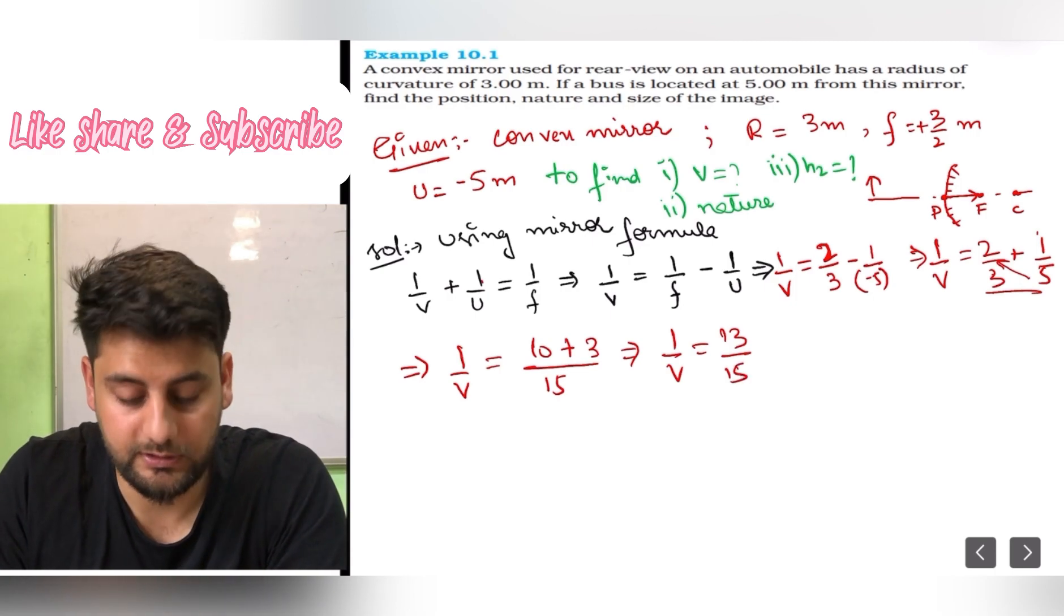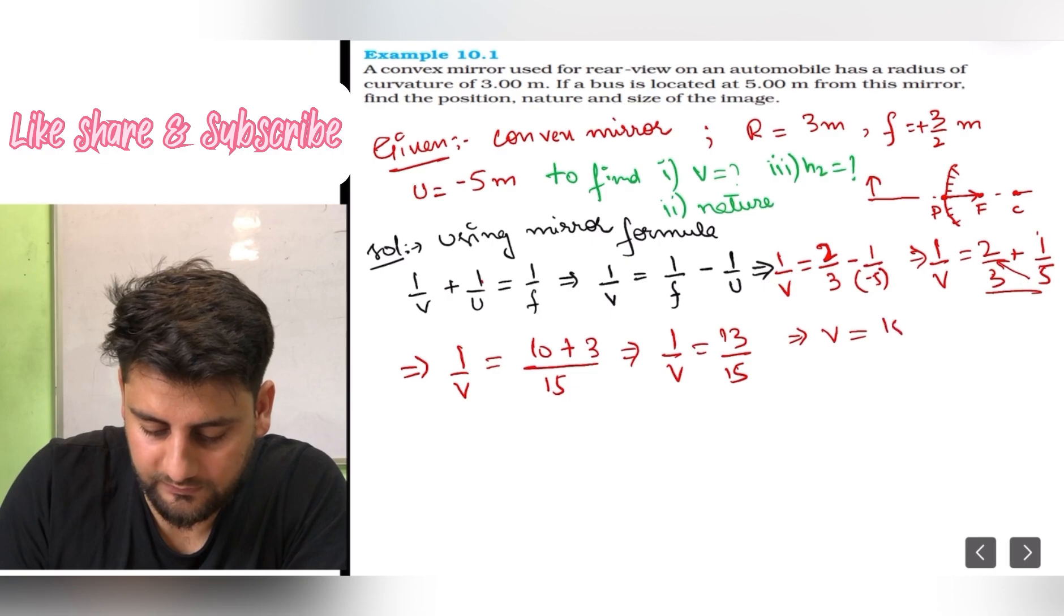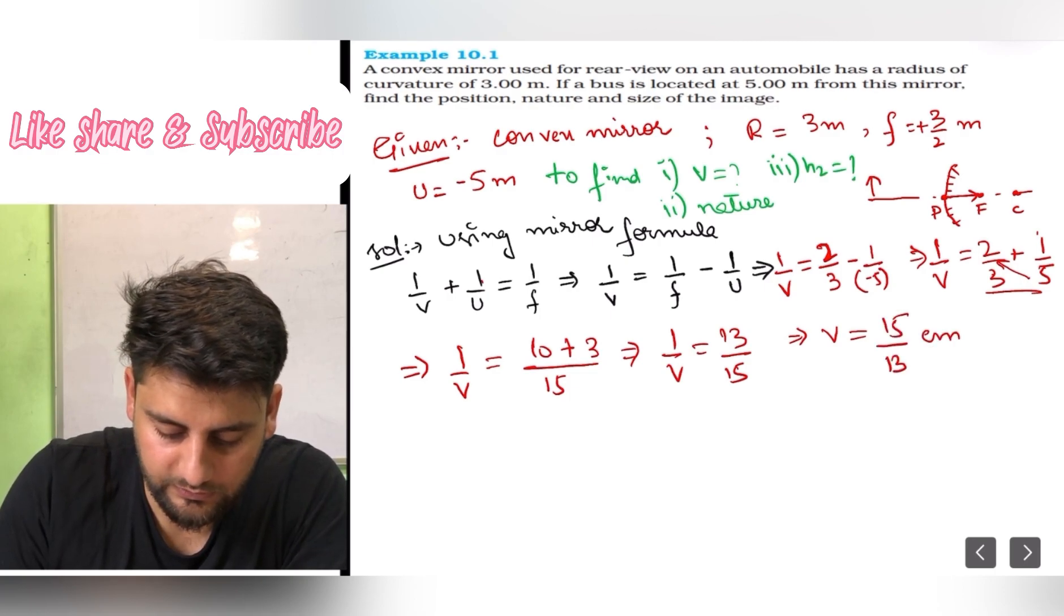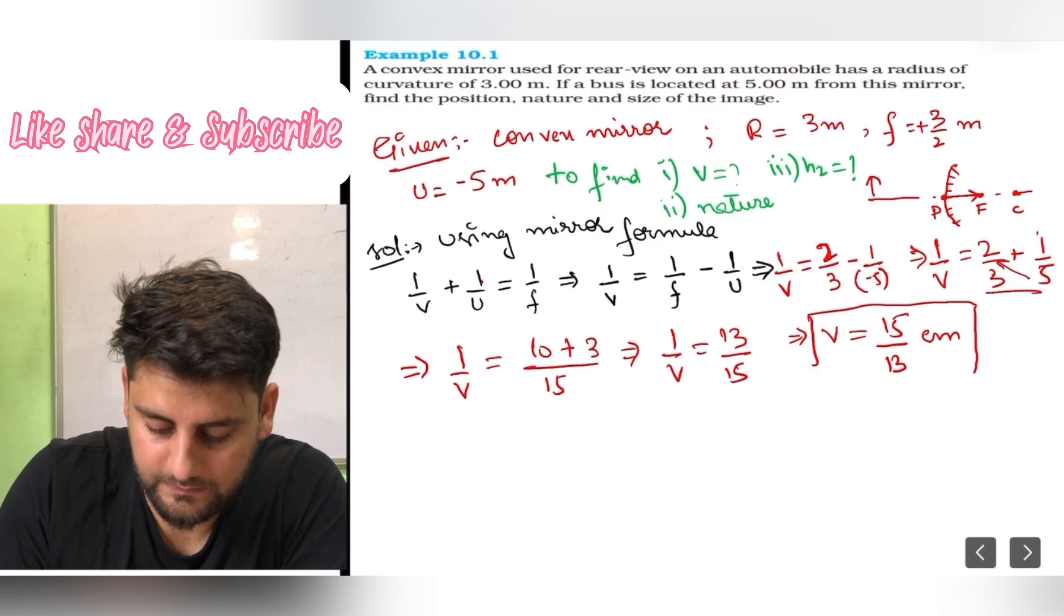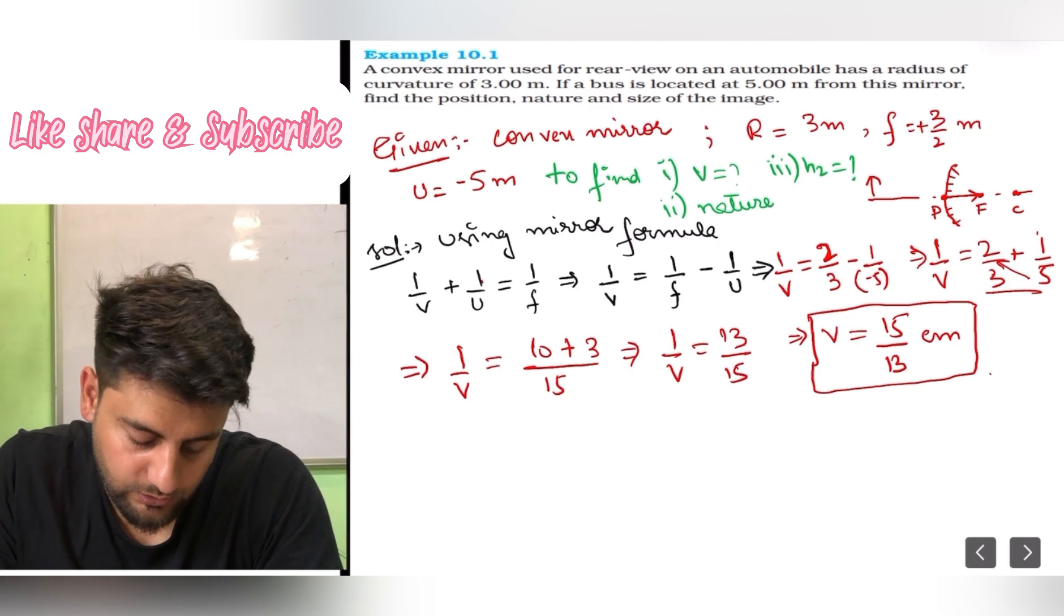Rearranging, 1 by v equals 2 by 3 minus minus becomes plus. So you will get 1 upon 5. So I am going to write 1 upon v equals, denominators multiply, 3 times 5 is 15. 5 into 2 is 10 plus 3 times 1 is 3. So you are getting 1 by v equals 13 by 15.